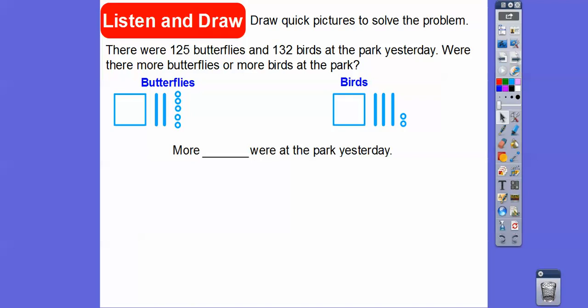So which ones were more at the park yesterday? Well, they both had a hundred in there, and then we look at the next digit, so the tens digit. This has two tens. This one has three tens. So three tens is greater than two tens. We don't even need to look at the ones. We're looking at the tens digits. So there were more birds at the park.